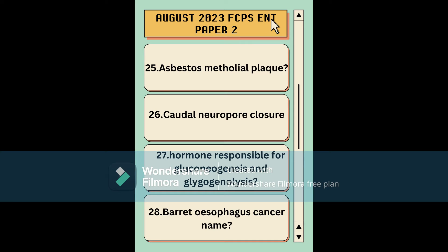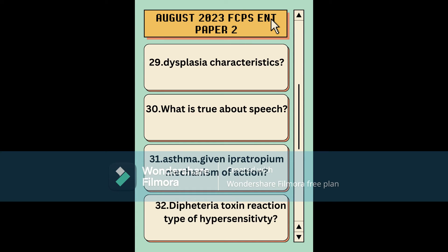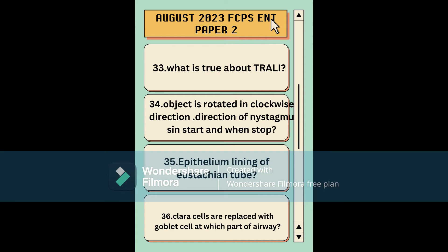There was a question about choanal atresia — what defect in choanal foreclosure causes it. Then: which hormone is responsible for gluconeogenesis and glycogenolysis. A question asked the name of cancer caused by thyroid/esophagus involvement. Then a question about dysplasia and what is true about speech development. Pharmacology question: mechanism of action of ipratropium in asthma. The hypersensitivity table in First Aid is very important — all examples should be memorized.